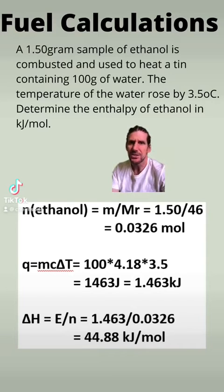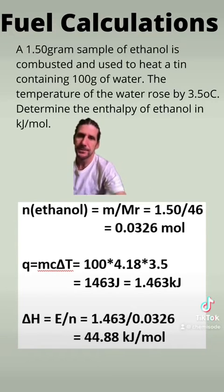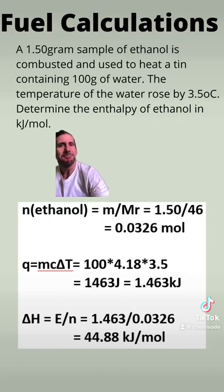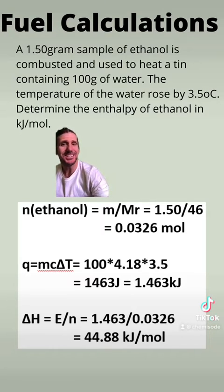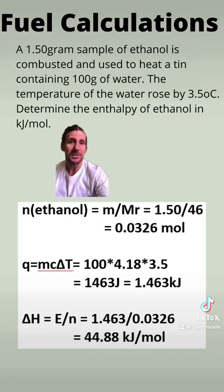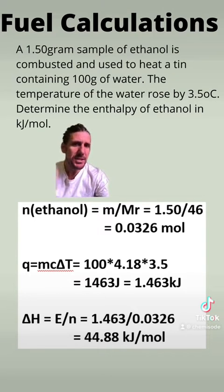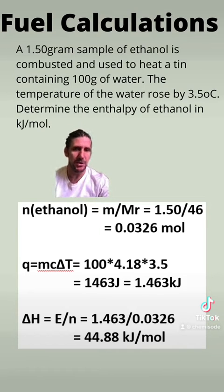Let's have a look at a stock standard fuel calculation. A 1.5 gram sample of ethanol is combusted and used to heat a tin containing 100 grams of water. The temperature of the water rose by 3.5 degrees Celsius. Determine the enthalpy of the ethanol in kilojoules per mole.